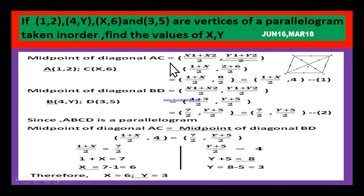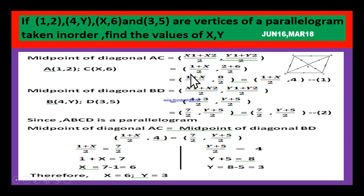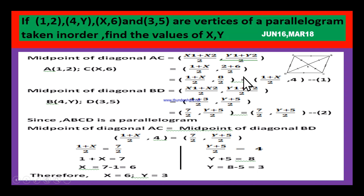First, the midpoint of diagonal AC equals (X1 + X2)/2, (Y1 + Y2)/2, where X1, Y1 are coordinates of A and X2, Y2 are coordinates of C. That gives (1 + X)/2 for the X part, and (2 + 6)/2 = 8/2 = 4 for the Y part. So the midpoint of diagonal AC is ((1 + X)/2, 4).